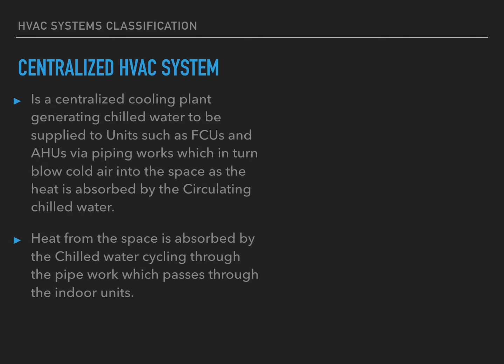The second type of HVAC system is the centralized HVAC system. The centralized system is present in one geographic location where the plant is responsible for generating the whole cooling requirements, which is then transmitted towards your space or zones. A centralized HVAC system is a centralized cooling plant which generates chilled water to be supplied to units. Recapping from the decentralized system — the fluid cycling throughout that refrigeration system was a refrigerant responsible for taking heat from your space.